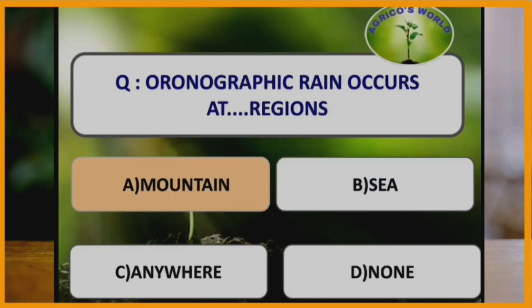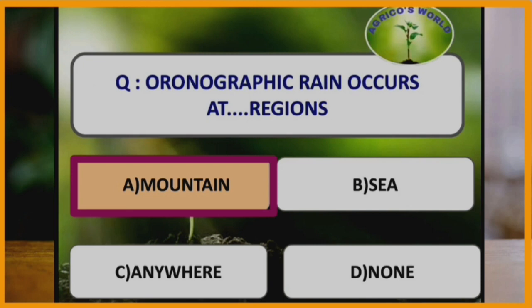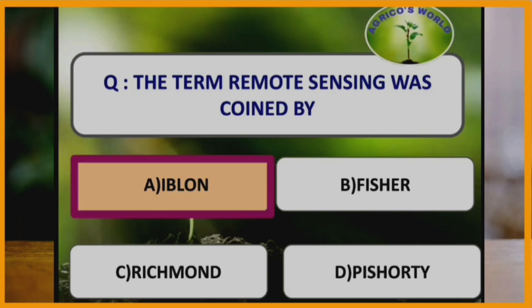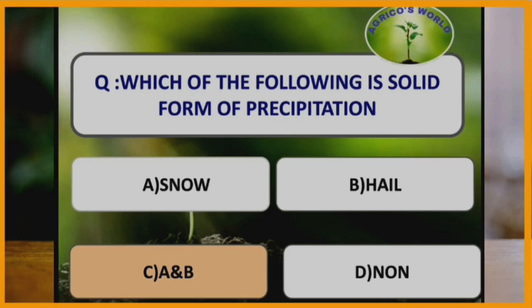Orographic rain occurs in mountain regions. The term remote sensing was coined by scientist Evelyn Pruitt. Remote sensing word was used by Fisher in the year 1960. The father of remote sensing is Peixoto. Snow and hail are the solid forms of precipitation.